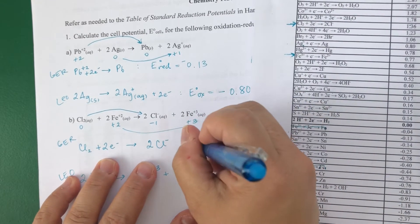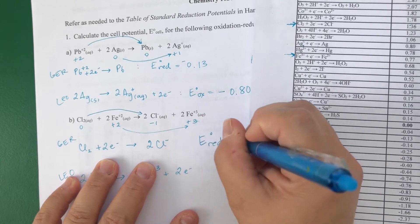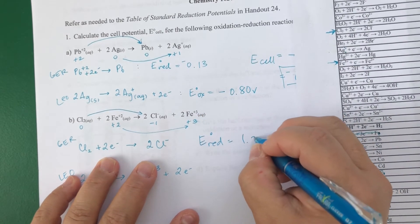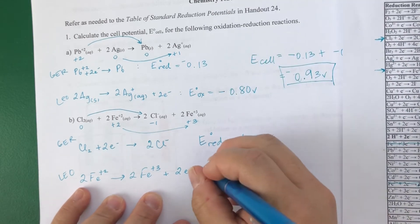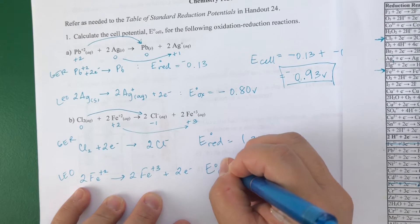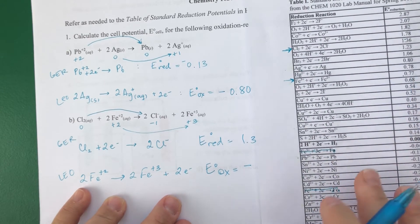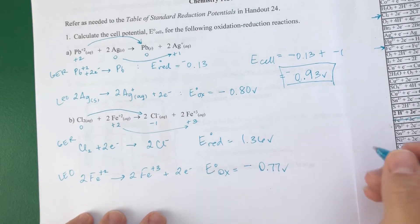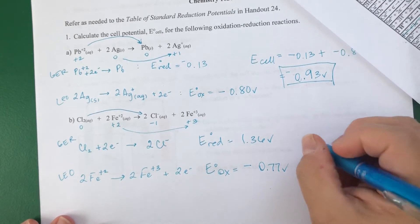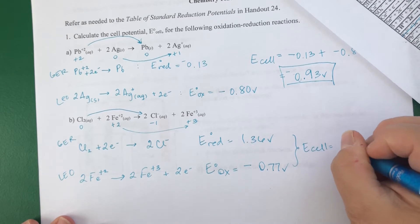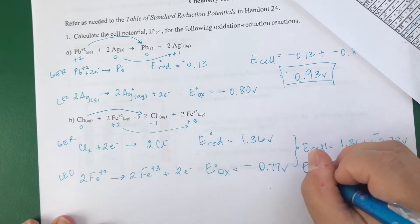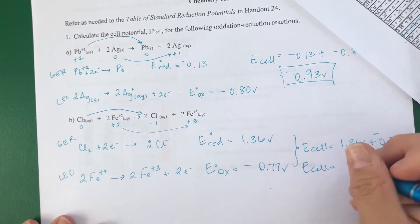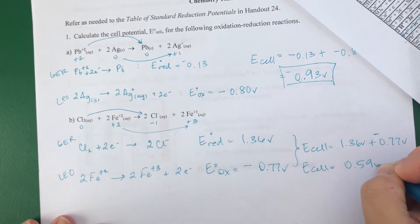That's 1.36. So I'm going to use the E_red here, because it's the reduction, and that is 1.36 volts. And then here I have Fe²⁺, Fe³⁺, but I want the oxidation, which is net opposite of whatever's here, 0.77. So now I get my E_cell, 1.36 plus negative 0.77 volts. And so my E_cell, 0.59 volts.